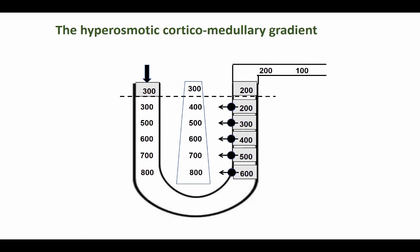In humans, the fluid in the descending limb of the loop of Henle is always going to become more concentrated. The fluid in the ascending limb is going to become more and more hyposmotic, and therefore the fluid that is eventually pushed into the early distal convoluted tubule is going to be hyposmotic to the environment.